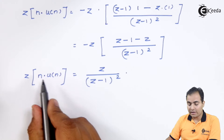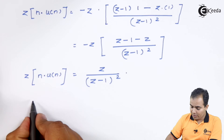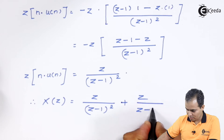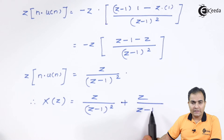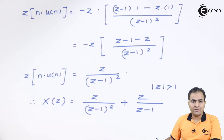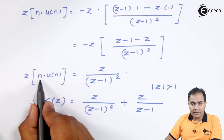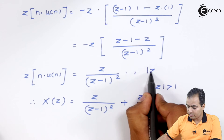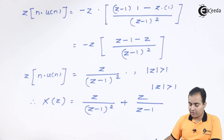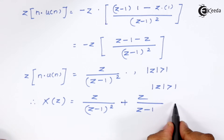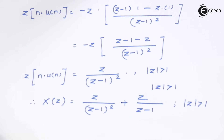We now have the Z-transform of u(n) and n·u(n) calculated. So X(z) = z/(z−1)² + z/(z−1). The ROC of the u(n) part is |z| > 1, and similarly the ROC of the n·u(n) part is also |z| > 1. Since both parts have the same ROC, the overall ROC of X(z) is |z| > 1.